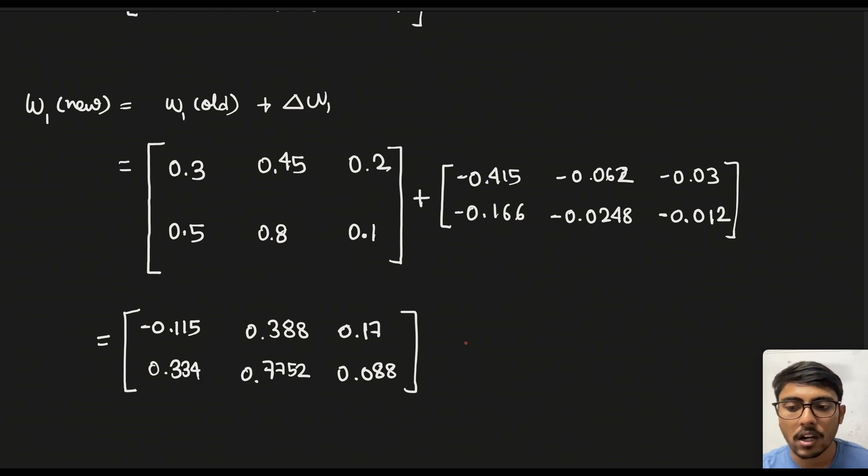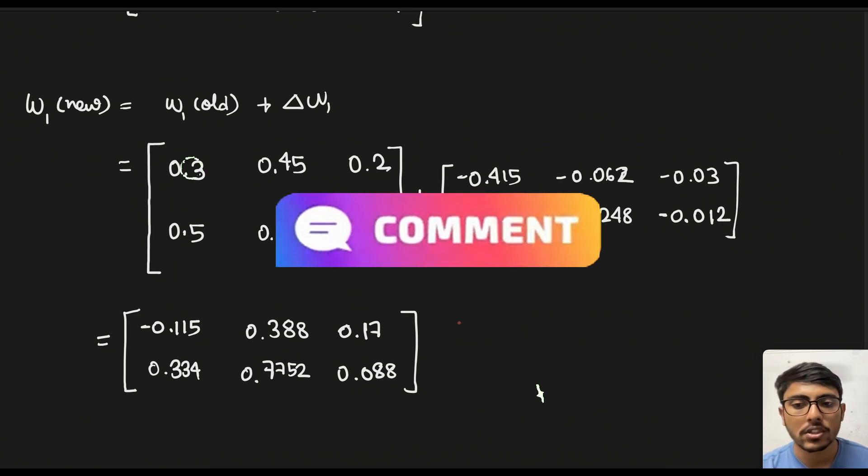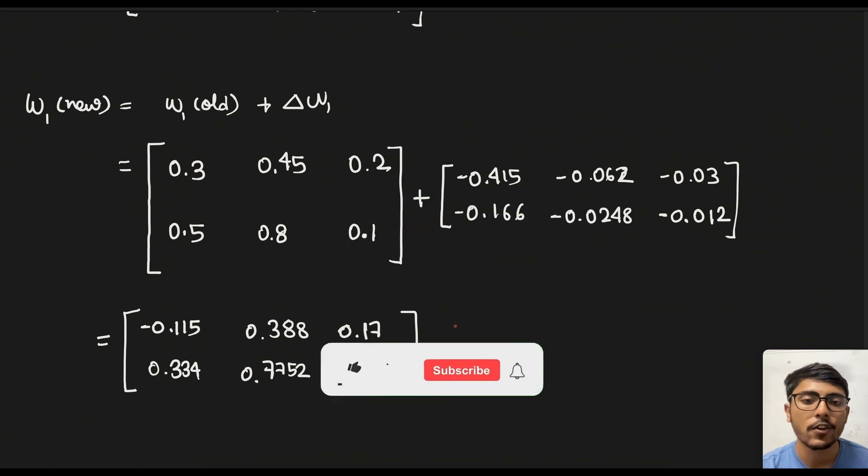So this is how you perform backpropagation using matrices. I have done this for a single hidden layer but you can do this for a neural network where there are multiple hidden layers along with many more neurons and inputs. So that's been it. If you still have any doubts then feel free to reach out in the comment section below. If you liked this video then give it a thumbs up and subscribe to my channel for the upcoming videos. Till then happy solving.